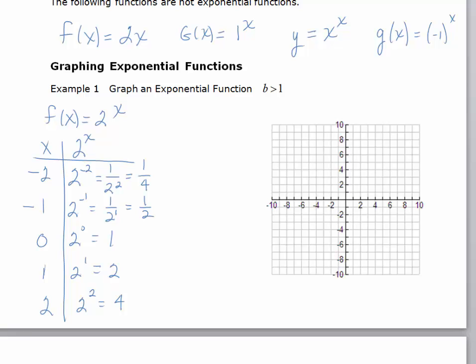2 to the negative 2, when x equals negative 2, we're at about 1 fourth. At 2 to the negative 1, we're at about 1 half. 2 to the 0 is equal to 1, 2 to the 1 is equal to 2, and 2 to the 2 is equal to 4.